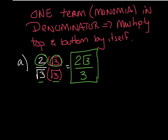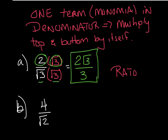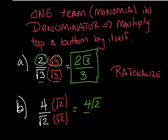Let's try another one: 4 over radical 2. This is not simplified, so the word you want to use is rationalize. I'm going to multiply by 1, which is really radical 2 over radical 2. On top, I get 4 radical 2, and on the bottom, radical 2 times radical 2 is just 2. This can be cleaned up one more step — 4 divided by 2 gives me 2 radical 2.